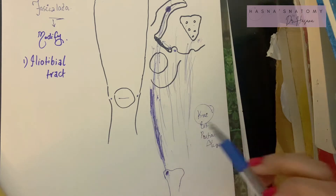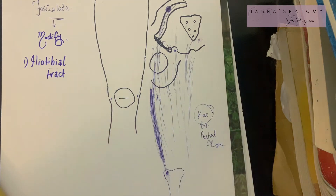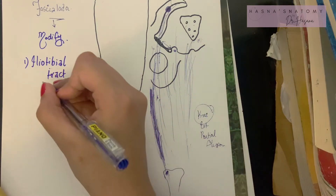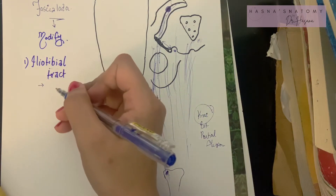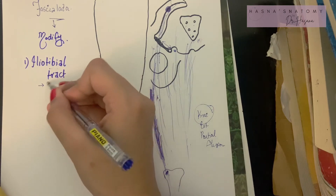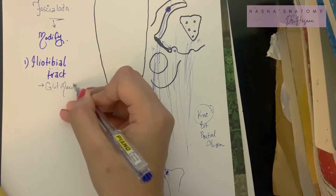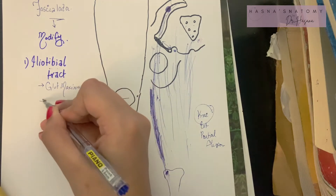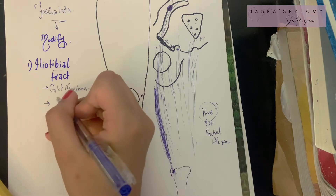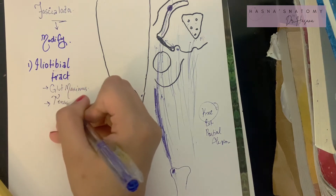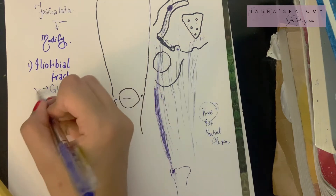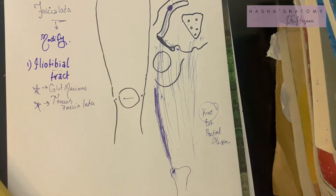The most important part about the iliotibial tract is what muscles are inserted into it — this is a very important exam question. The muscles inserted into the iliotibial tract are gluteus maximus and the tensor fascia lata, the muscle that carries out function over the fascia lata. Keep these two muscles in mind.